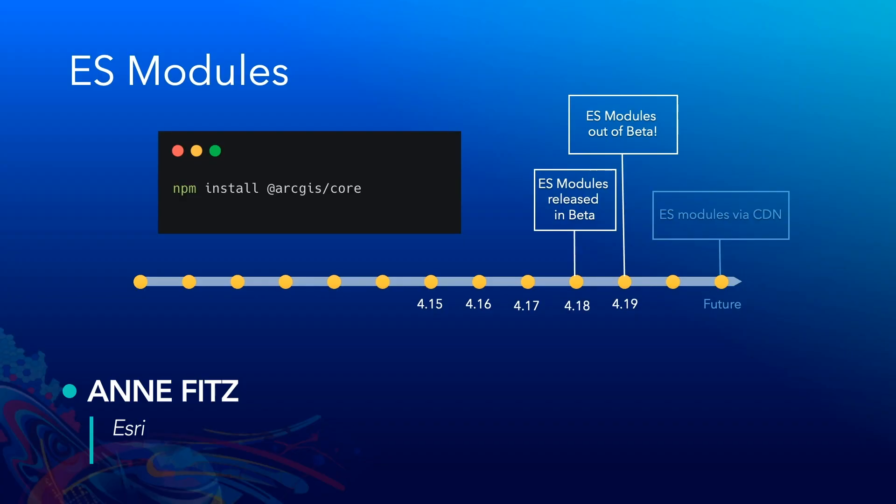Today, I'm happy to announce that support for ES modules was released in beta last year and will be ready for production in the upcoming release of the ArcGIS API for JavaScript. Previously, getting started with the JavaScript API with different frameworks and build tools was difficult. You had to use a helper library or an additional plugin to get it to work.